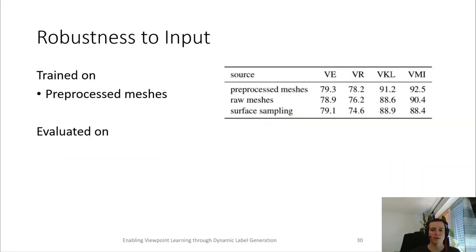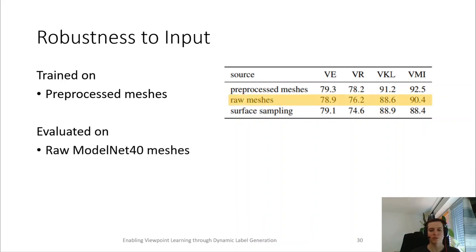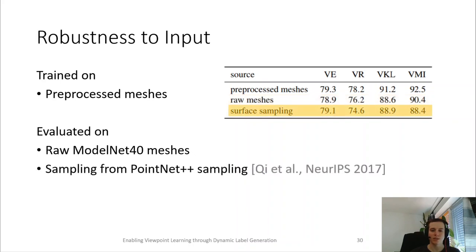To evaluate the robustness of our method to the input mesh quality, we take our network, which is trained on the clean pre-processed meshes, and evaluate it on the raw ModelNet40 meshes, and also on data provided by Key et al., which use a different pipeline to clean the input meshes. Note that we only see a slight drop in the quality of the prediction of our network.